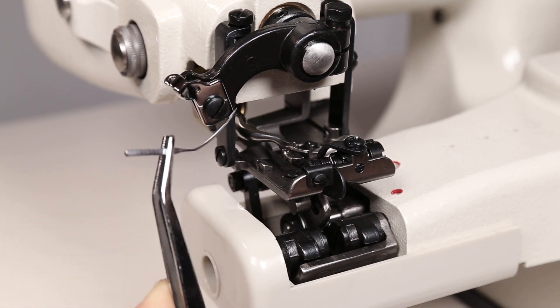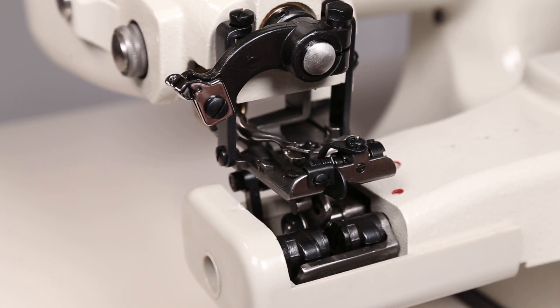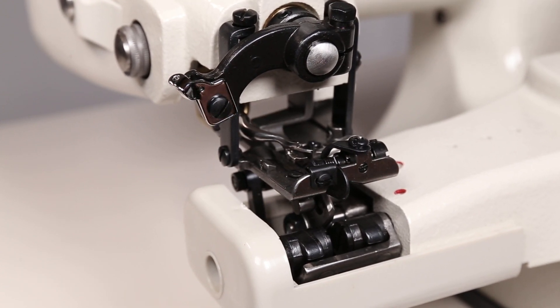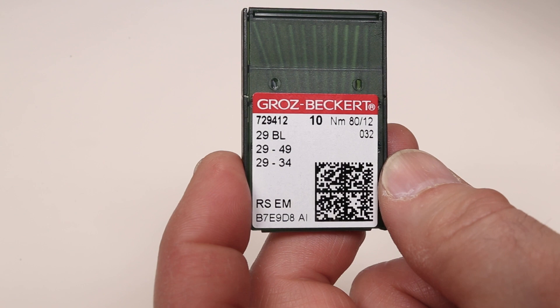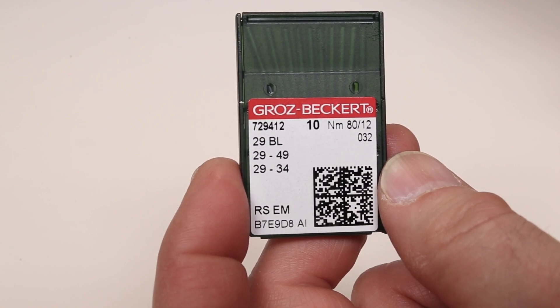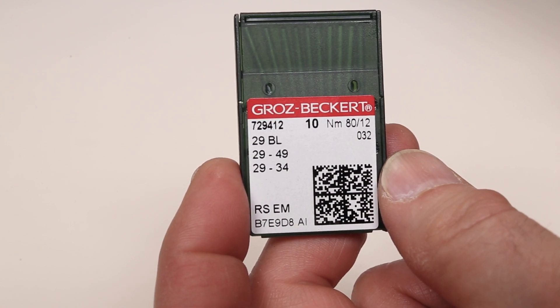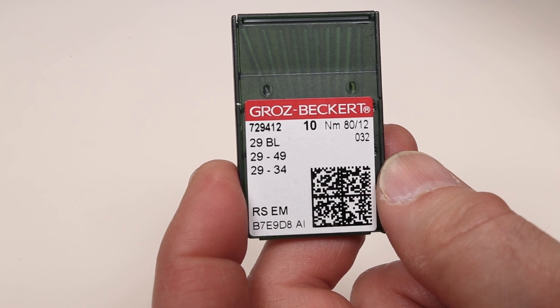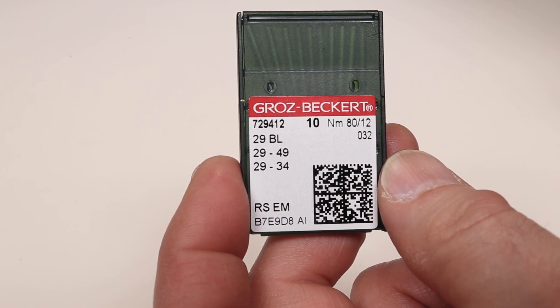Bring your needle down and out. The needle that I'm going to be using in this machine is system 29 BL, which is on the left. The size I'm going to be using is 80/12. A size 80 needle is a good neutral needle for medium weight to lightweight materials.